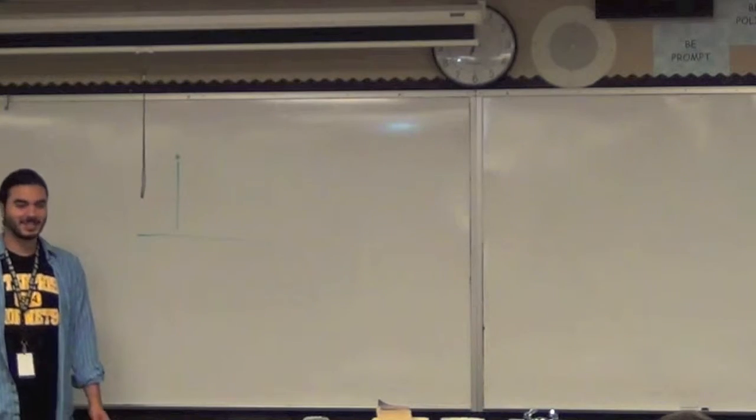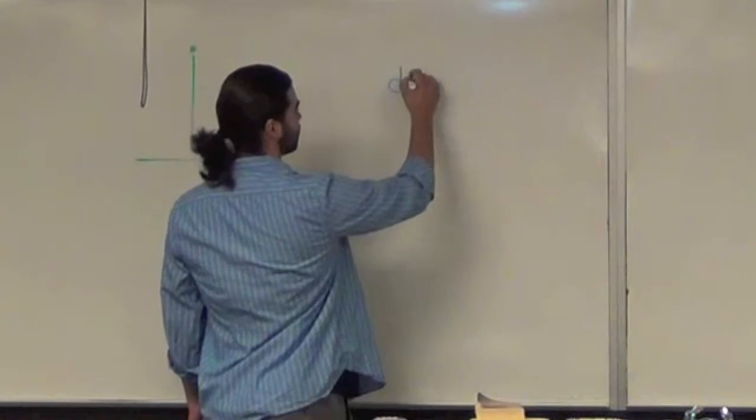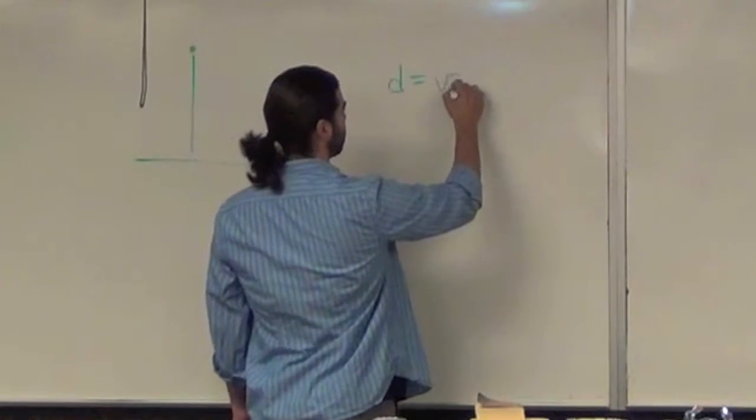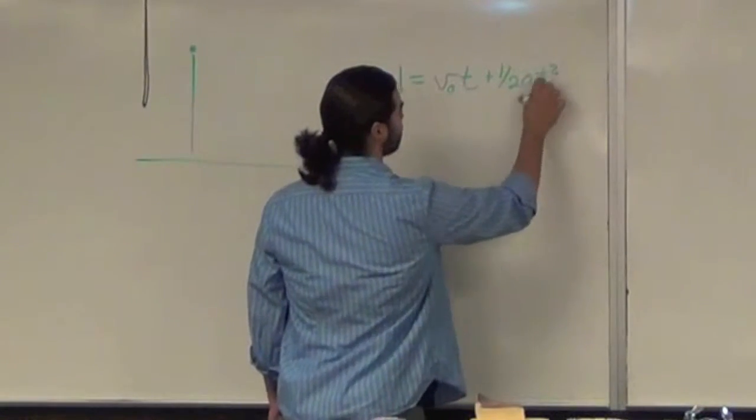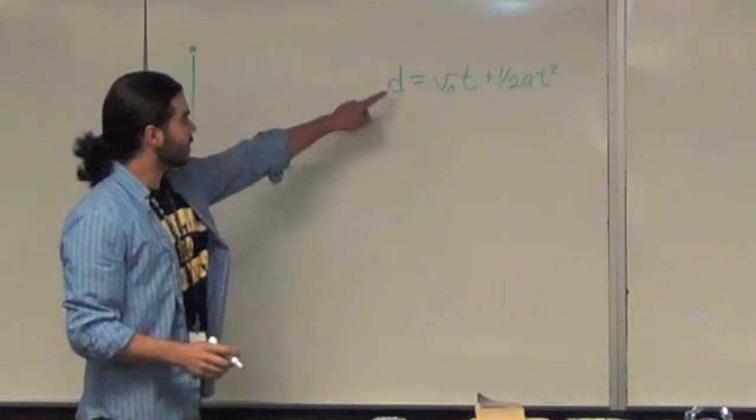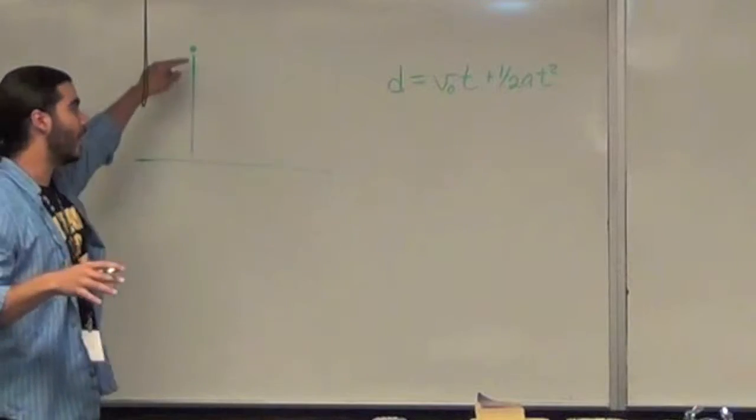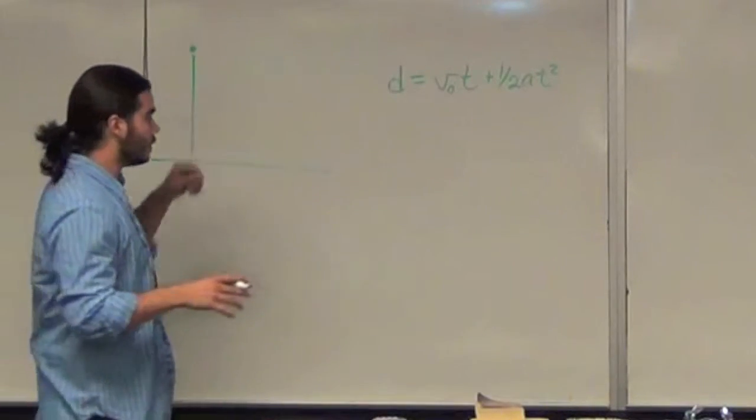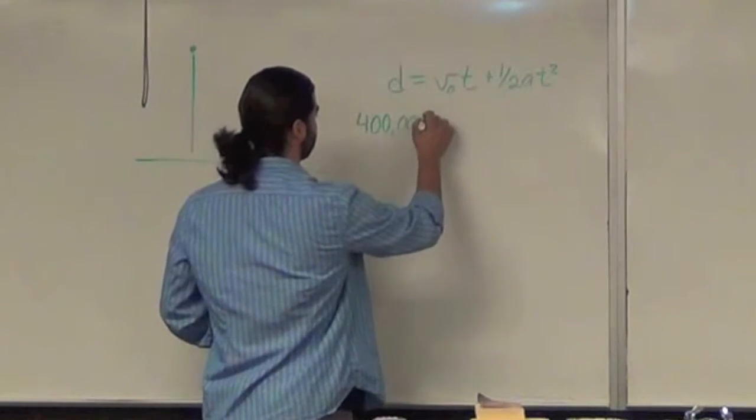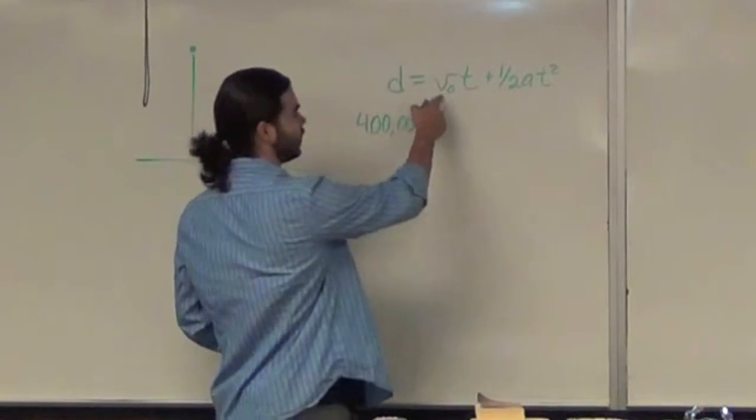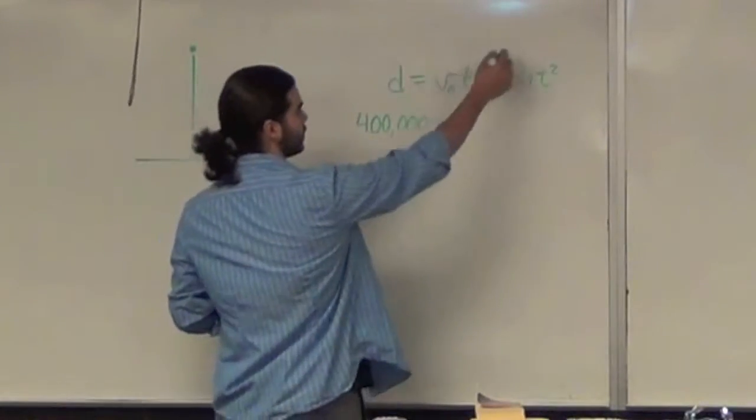This is a physics class. You guys know the equations, how to do this. The equation you need here is that distance traveled is equal to your initial velocity times time plus one-half at squared. So, the distance traveled is going to be this distance here. We're only worrying about the y-axis right now. So, that's 400 kilometers. 250 miles is 400 kilometers. 400,000 meters is equal to your initial velocity in the y direction is zero. So this term just canceled out.